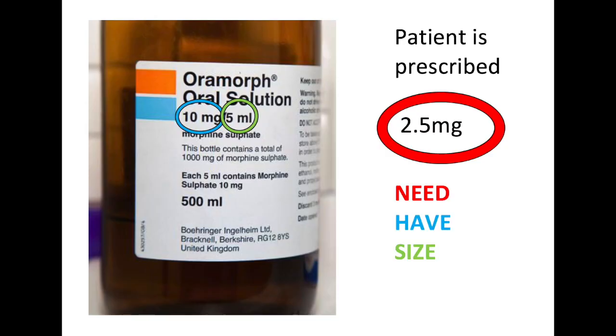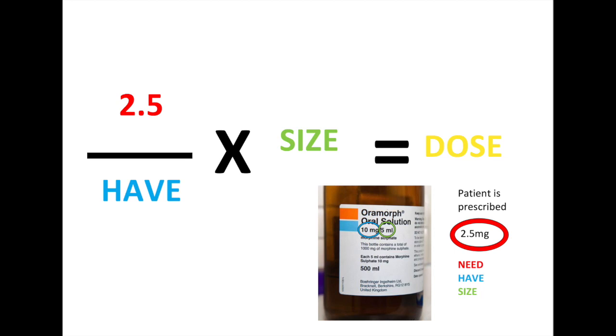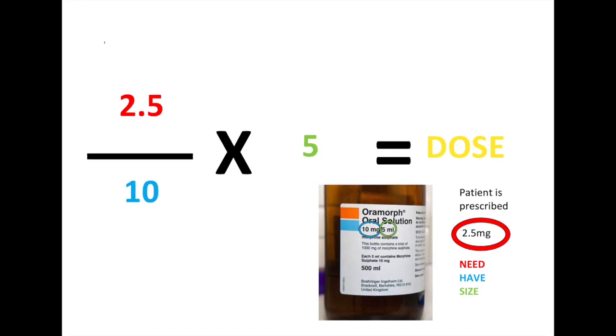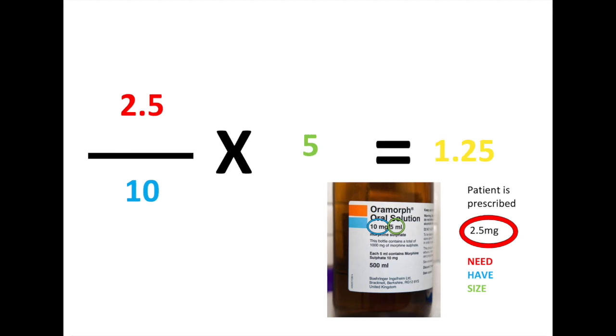Next we'll do liquids — morphine sulfate, for example. That comes in 10 milligrams per 5 mils. If we want to give 2.5 milligrams, we do 2.5 divided by 10, which is 0.25, and then multiply that by 5 to get 1.25. So if we want to give 2.5 milligrams, we're going to give 1.25 mils. Simple.